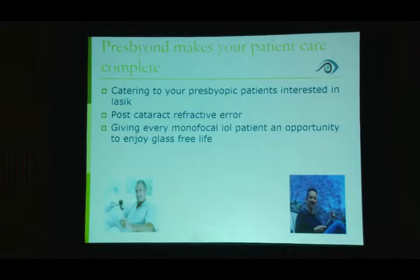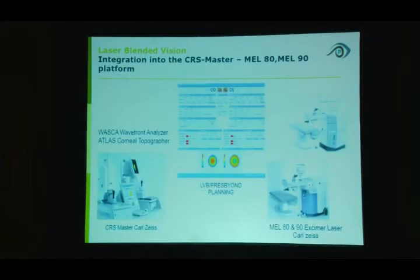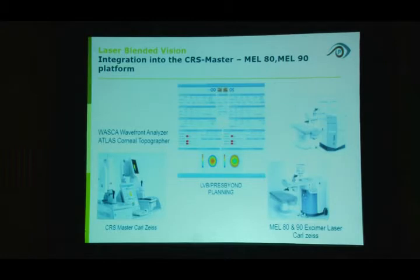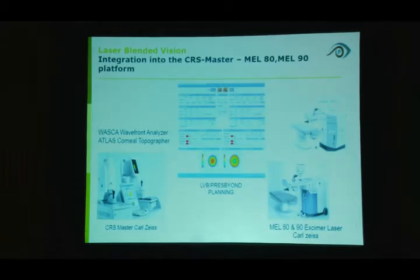Regarding the software: the default add is 1.5 diopters, but for younger patients around 37–38, if a +1 diopter already improves near vision, I reduce the add to 1.25 diopters. Because spherical aberration is also induced in the cornea alongside, this gives an effective near add of approximately +2 to +2.25 diopters. With 1.5 diopters the effective near add is approximately +2.5 diopters. The newer software also includes functional age, greater flexibility of optical zone, and ability to account for pre-operative spherical aberration.